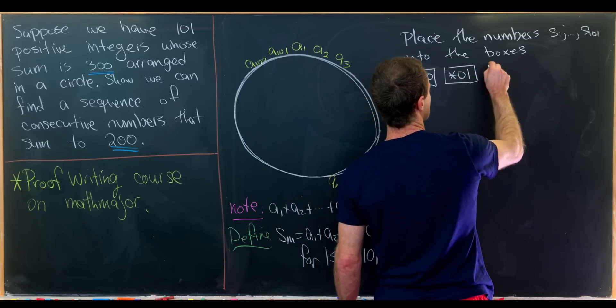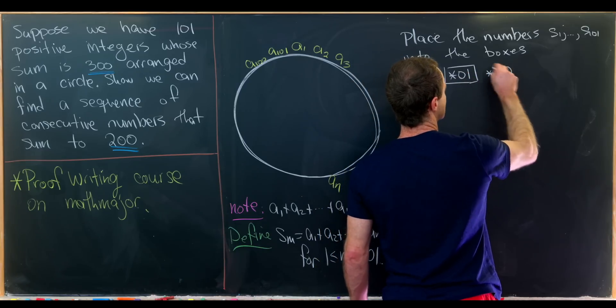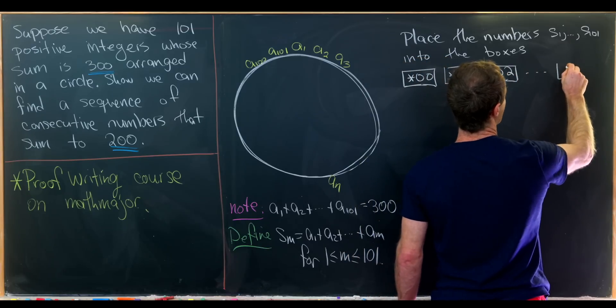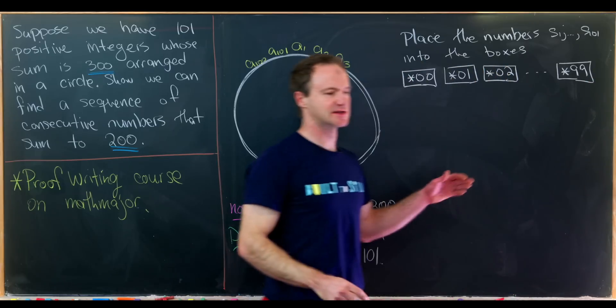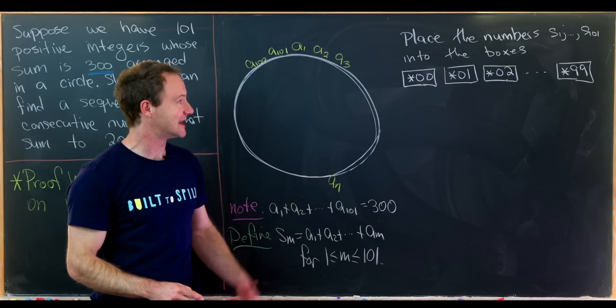And then we have another box that ends in 01. So that'll be star 01. We'll have star 02, all the way up to our very last box will be star 99. So these boxes are defined by the ending digits.